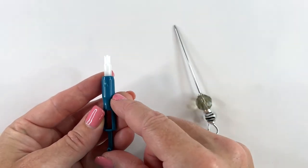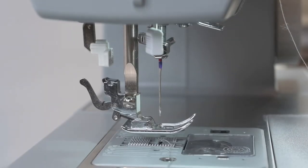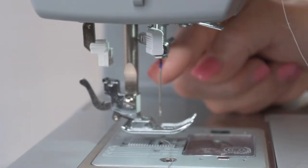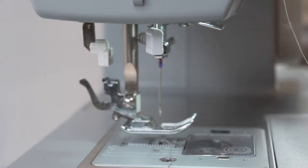So let's thread our needle on our machine. The difference between threading your needle for a hand sewing needle versus threading your needle on a machine is just that the machine locks your needle in place. There's a little more apparatus that you have to work around.